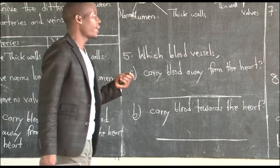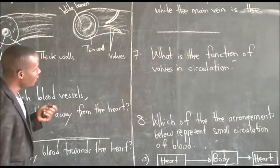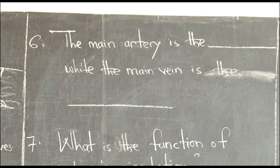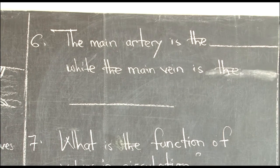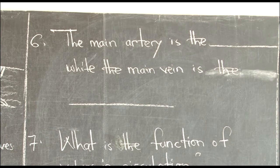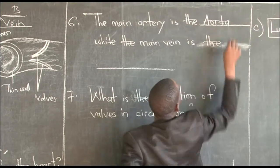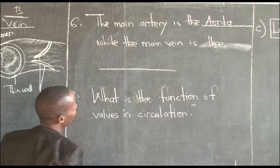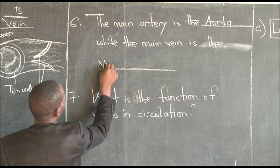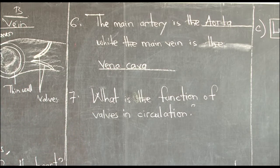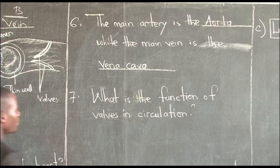Number six asks: the main artery in the body is dash, while the main vein is dash. We talked about this — the major artery is the aorta and the major vein is the vena cava. So the main artery is the aorta while the main vein is the vena cava. This is very common so we need to know which is the major artery and which is the major vein.